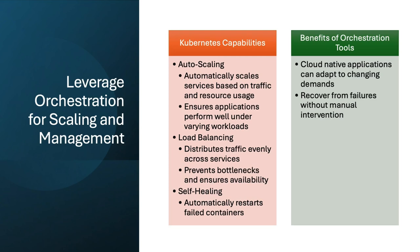Kubernetes simplifies container management by automating deployment, scaling, and management. Key capabilities include auto scaling, load balancing, and self-healing. These features ensure applications run efficiently and reliably, adapting to changing demands and recovering from failures without manual intervention.